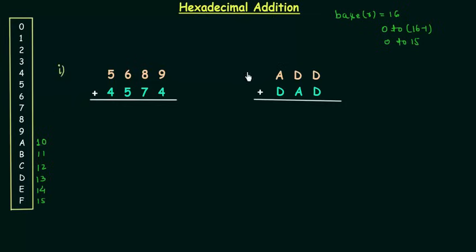I have two examples. In first example we have to add 5689 and 4574, and we will start our addition from right. 9 plus 4 is 13. 13 is a hexadecimal number and we represent 13 as D. So sum is equal to D.